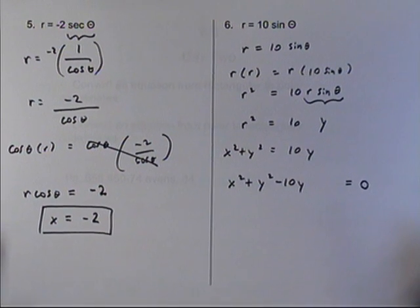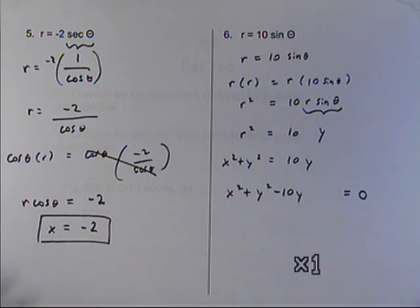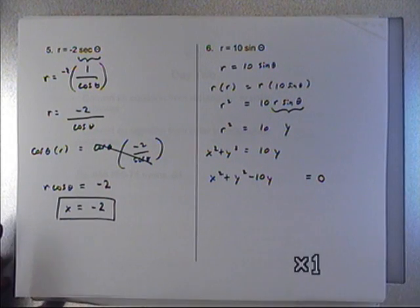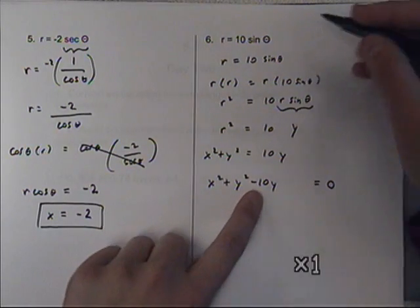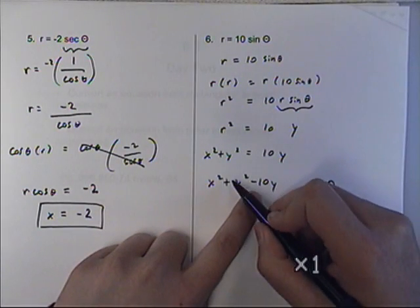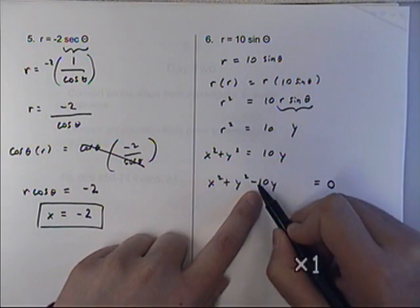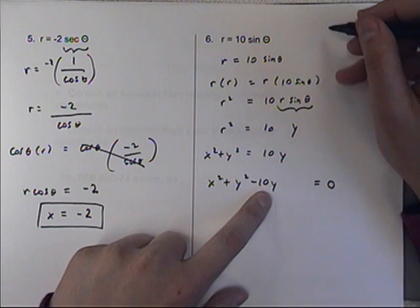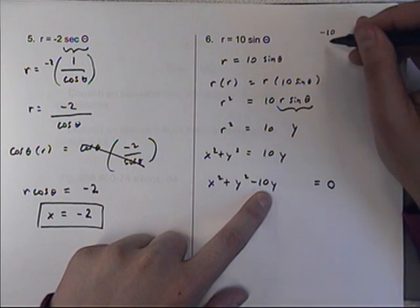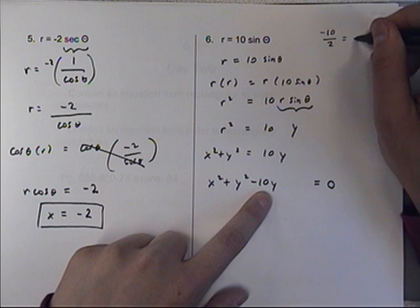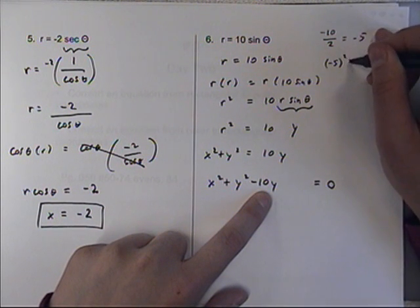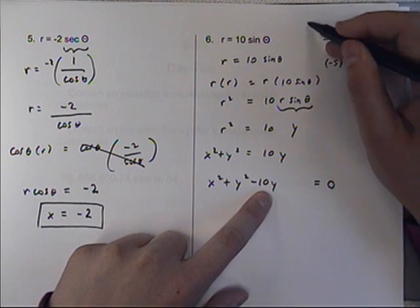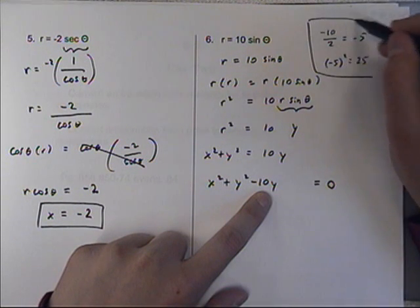So what do we do to put this in the standard form of a circle? We do something called completing the square. We practiced this a long time ago. You may not remember. So here's a quick review. You take this b type value. If this was a and b and c. You take your b value, which is in front of your y here. So it's negative 10. The first step is to cut it in half, which gives you negative 5. The second step is to take that answer and square it, which gives you 25. That's kind of like my side work here.